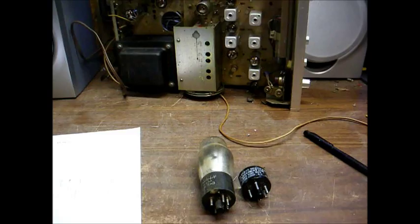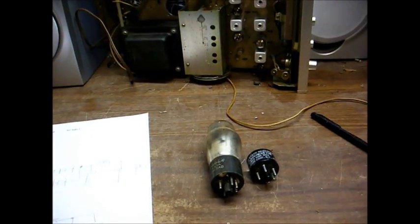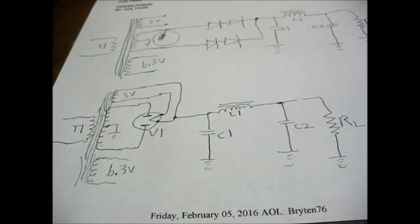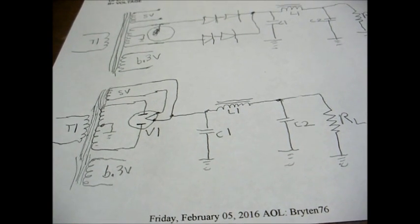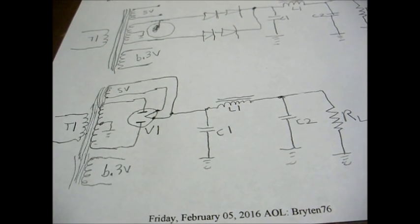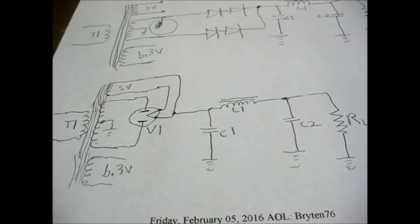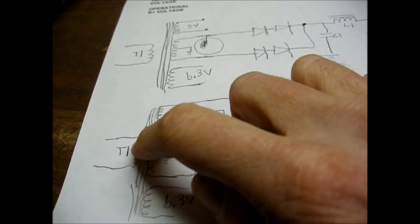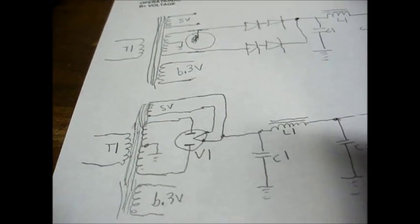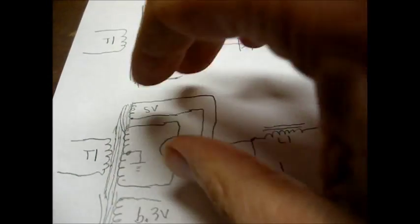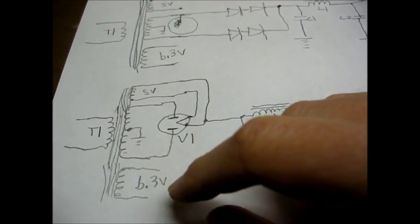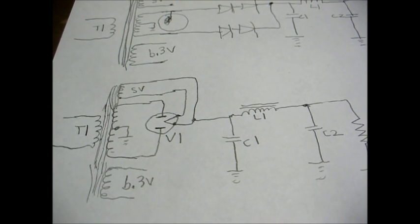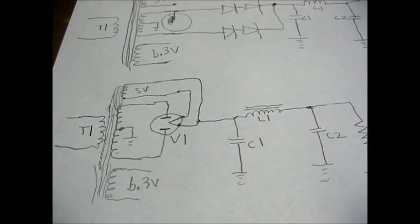First, let's look at a basic diagram of a tube rectification circuit and a solid-state rectification circuit. The bottom diagram is the basic power supply circuit that you'll find in an old radio or record player. We have our power transformer that accepts 120 volts AC coming into it from the wall outlet. And then we have three separate secondary windings here.